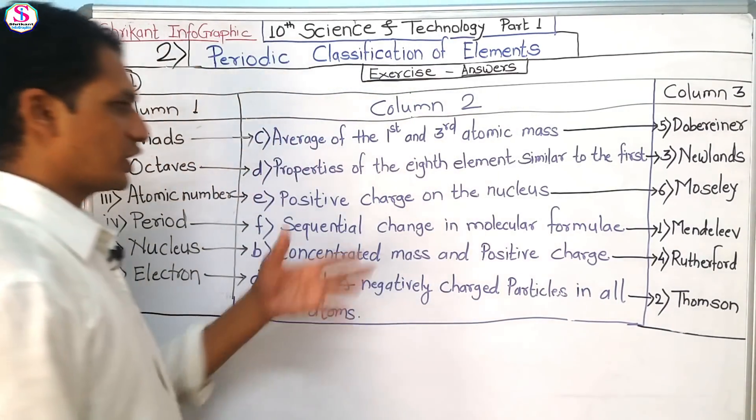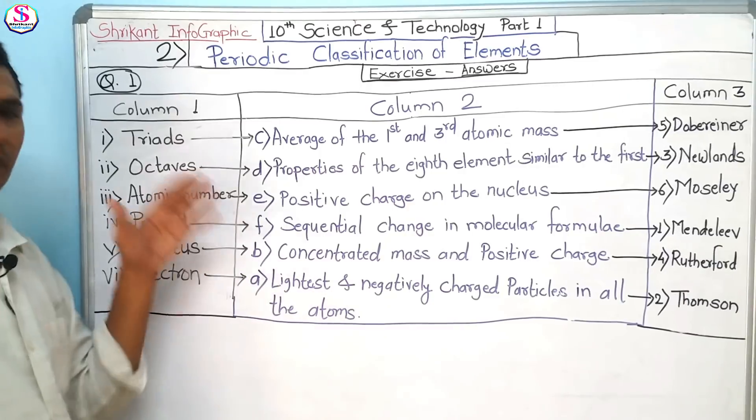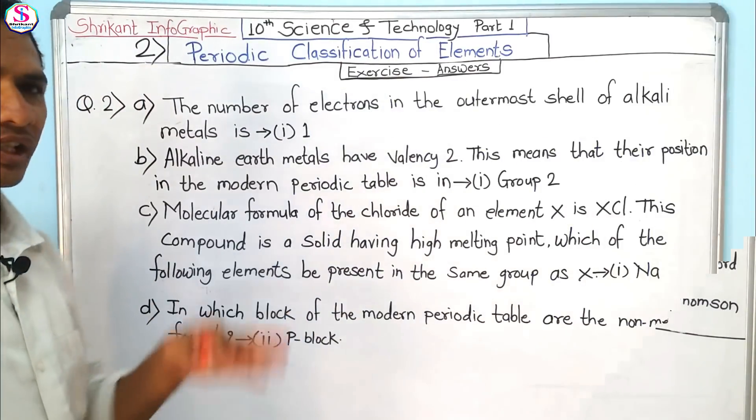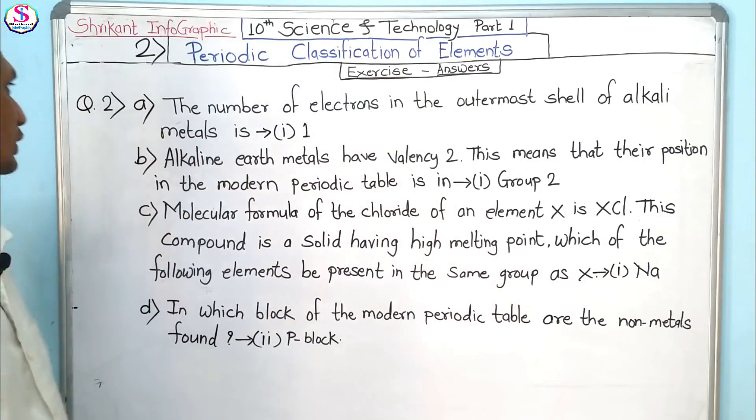The electron as the lightest and negatively charged particle in all atoms was given by J.J. Thomson. These are the answers for the first question. Now let's move to the second question.